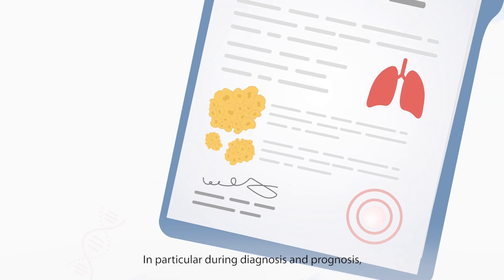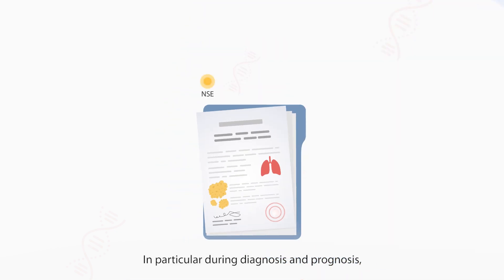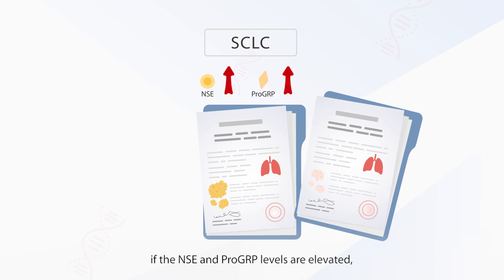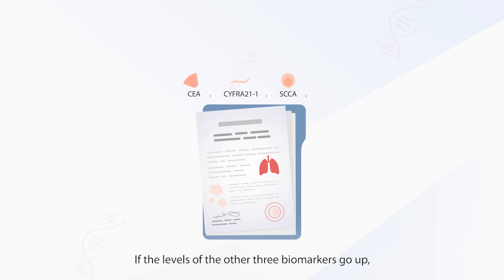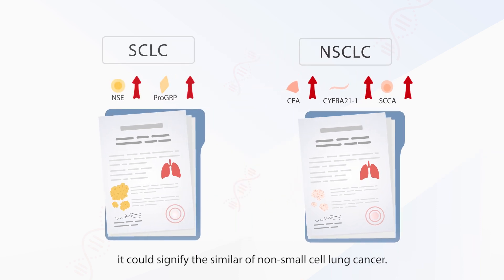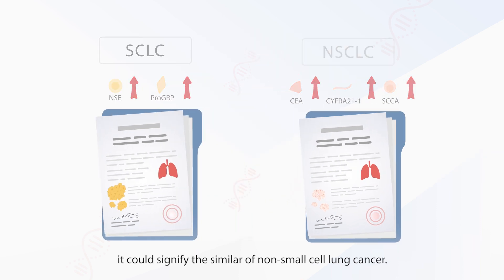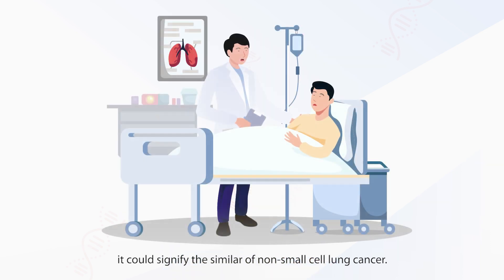In particular, during diagnosis and prognosis, if the NSE and pro-GRP levels are elevated, it could indicate the occurrence and negative outcomes of small cell lung cancer. If the levels of CEA, CIFRA-21-1, or SCCA go up, it could signify similar findings in non-small cell lung cancer.